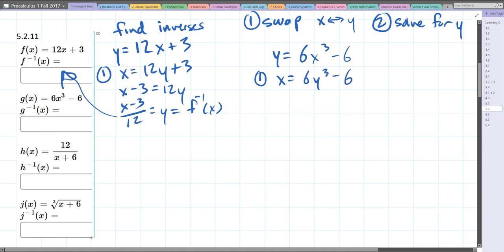Step two: solve for y. We need to eliminate a few things here. Following order of operations, we'll add 6 to both sides first, giving x + 6 = 6y³. Now divide both sides by 6.